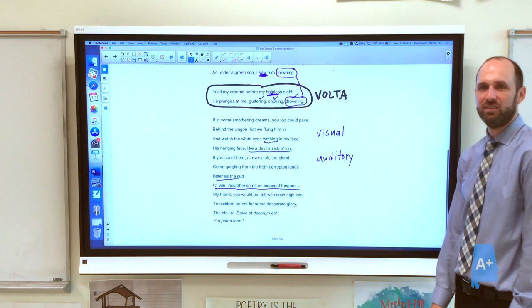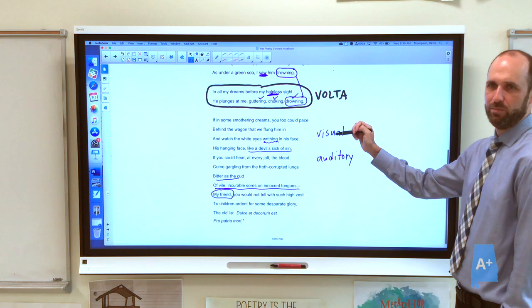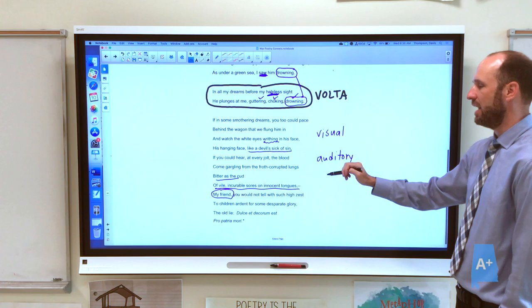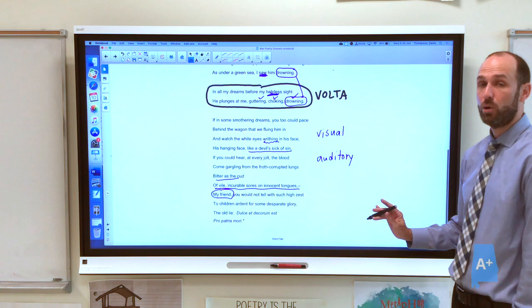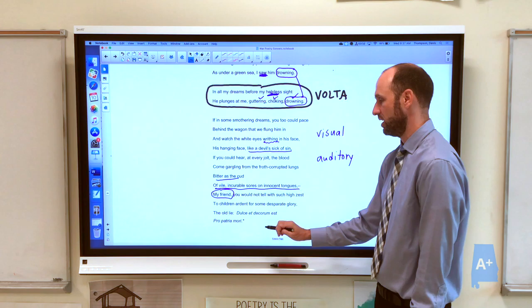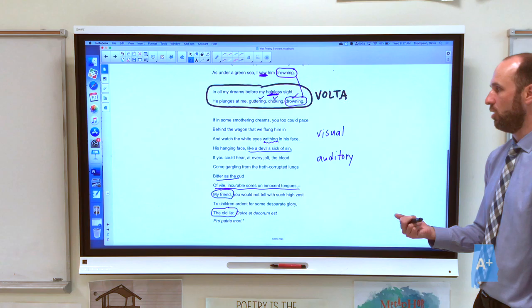We have this sort of ironic addressing to the person he's talking to. Like I said, probably the elementary school teacher. He says, if you could watch him in the wagon. If you could hear his lungs coming out of his mouth. My friend, you would not tell with such high zest to children ardent for some desperate glory. The old lie. Dulce et decorum est. Pro patria mori. How sweet and beautiful it is to die for one's country. He calls it, holding no punches, pulling no punches. The old lie. He doesn't think that it's true because what he's experienced in the war has made him see how awful mechanized warfare is.